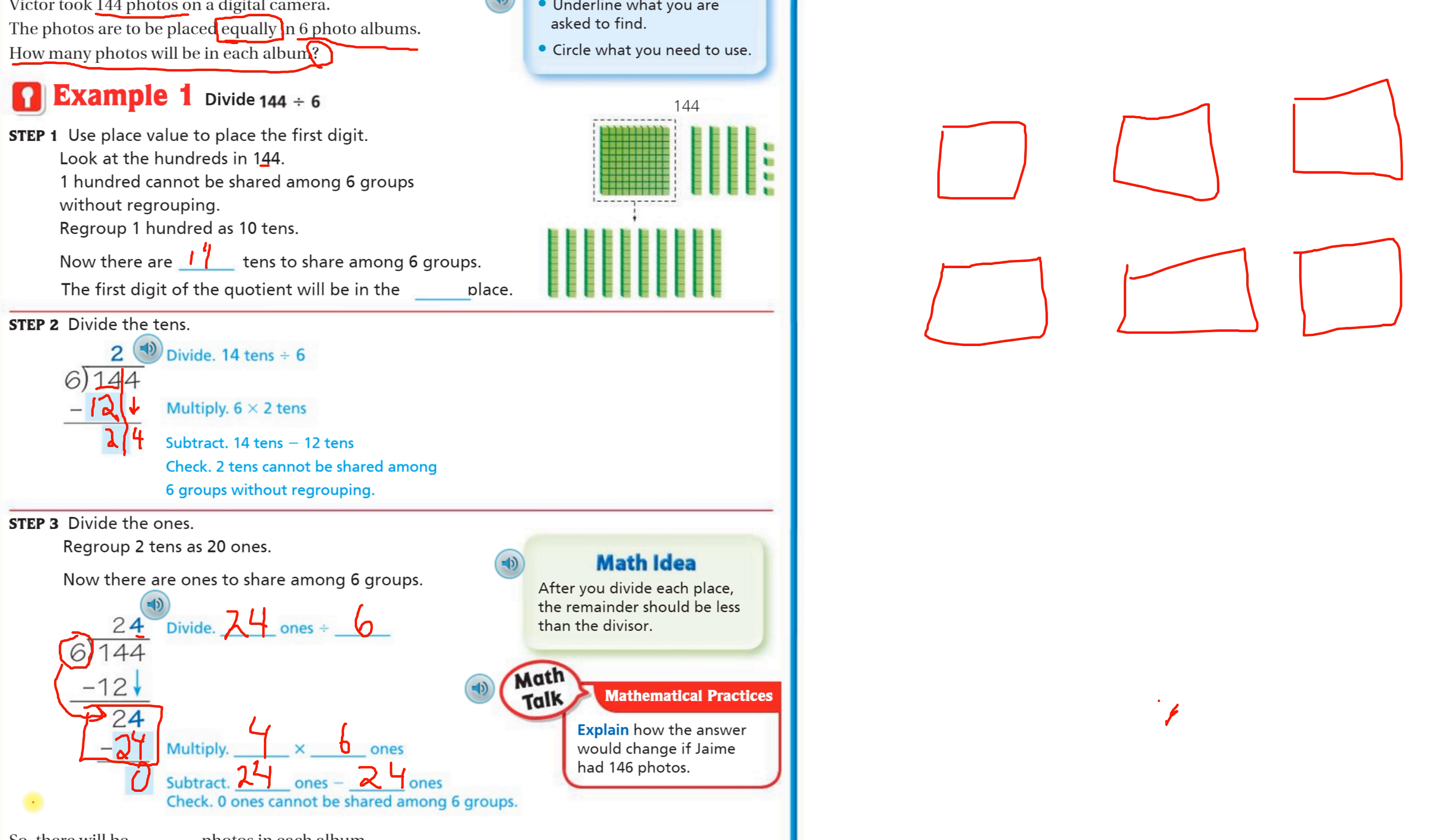You can see it in your textbook. Our answer, our quotient, tells us how many photos go in each one of these books, which is 24 in each one. If you did your dots, you would count 24 dots in each box. We can check our answer. I can multiply 24 times six and see if I get to 144. Or I can add 24 six times and see if I get back to my dividend of 144.